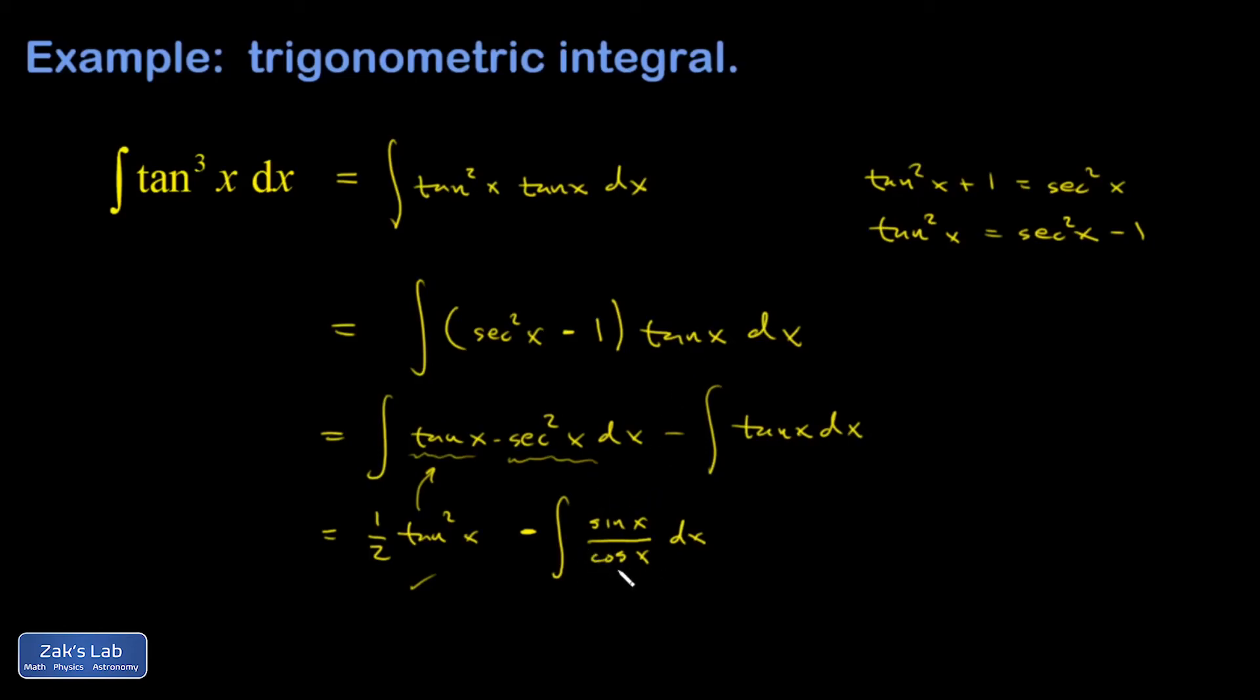And I noticed that the denominator is cosine, and the derivative of that is sitting right up here, especially if I put in a minus sign, multiply the inside and outside by negative 1.